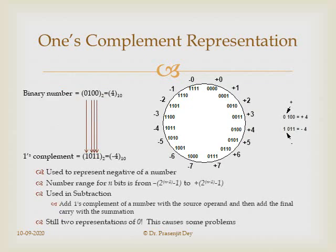In one's complement representation, we simply flip each bit of the number. For example, 0100 flipped bit by bit gives 1011, which is the negative representation. For 4 bits, one's complement can represent from −7 to +7. It is used for subtraction because it can represent negative numbers, but it still has the drawback of two representations of 0.